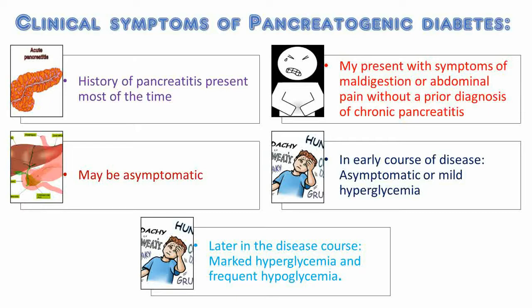However, patients may also present with symptoms of maldigestion or abdominal pain without a prior diagnosis of chronic pancreatitis, or even be asymptomatic — only by careful clinical evaluation can pancreatic disease be diagnosed. In the early course of disease, the patient may be asymptomatic or there may be mild hyperglycemia, and periods of glucose intolerance may only be evident during stress, illness, or high dose steroid treatment.